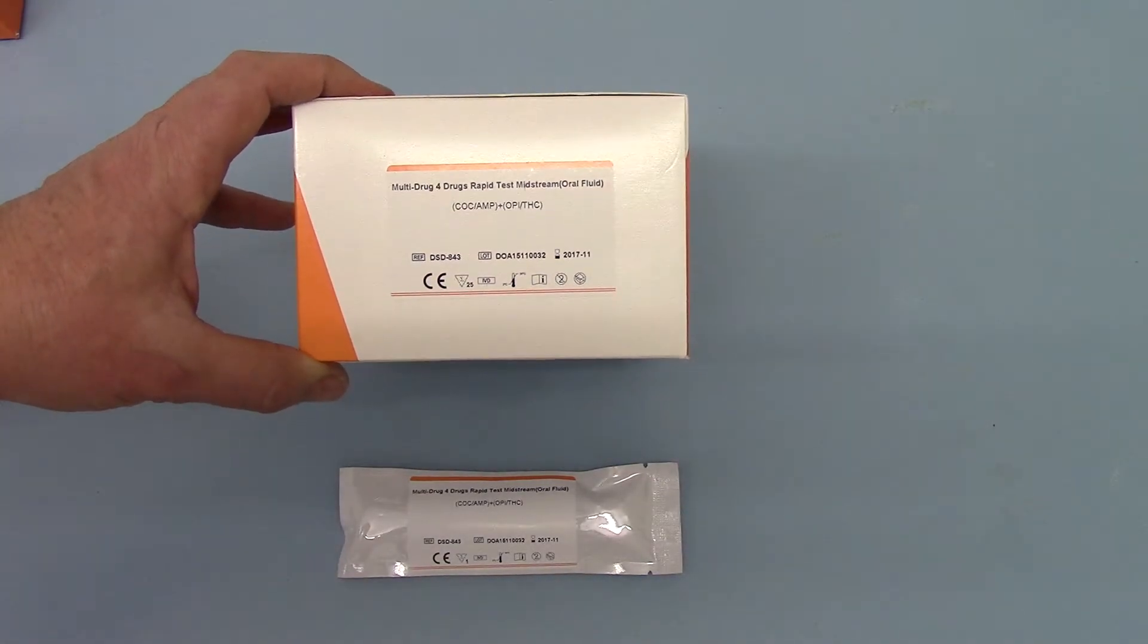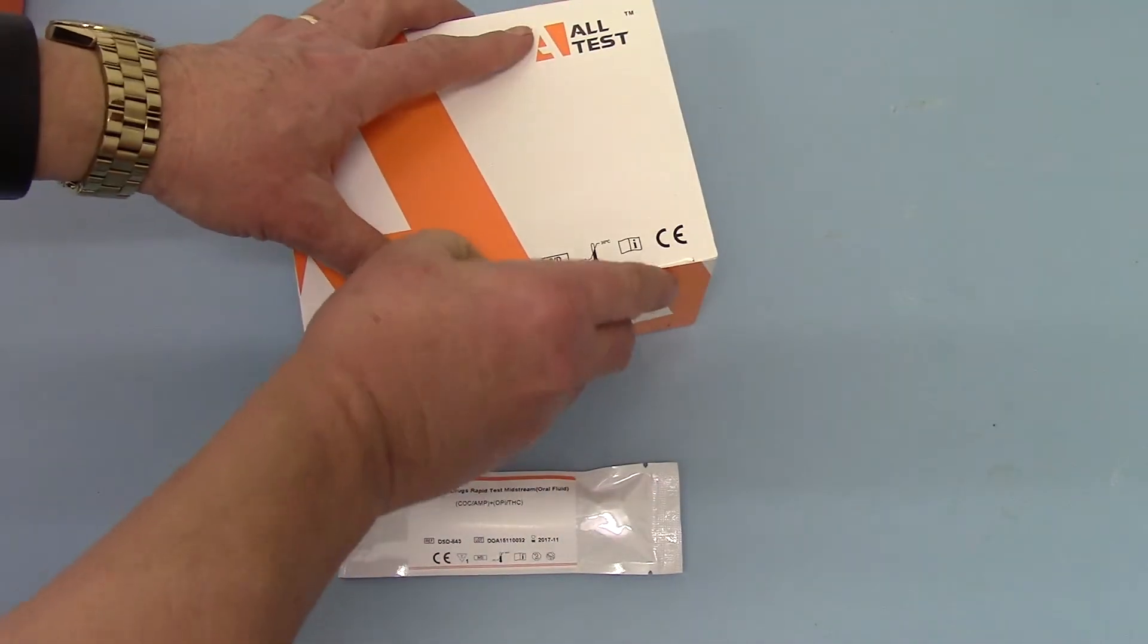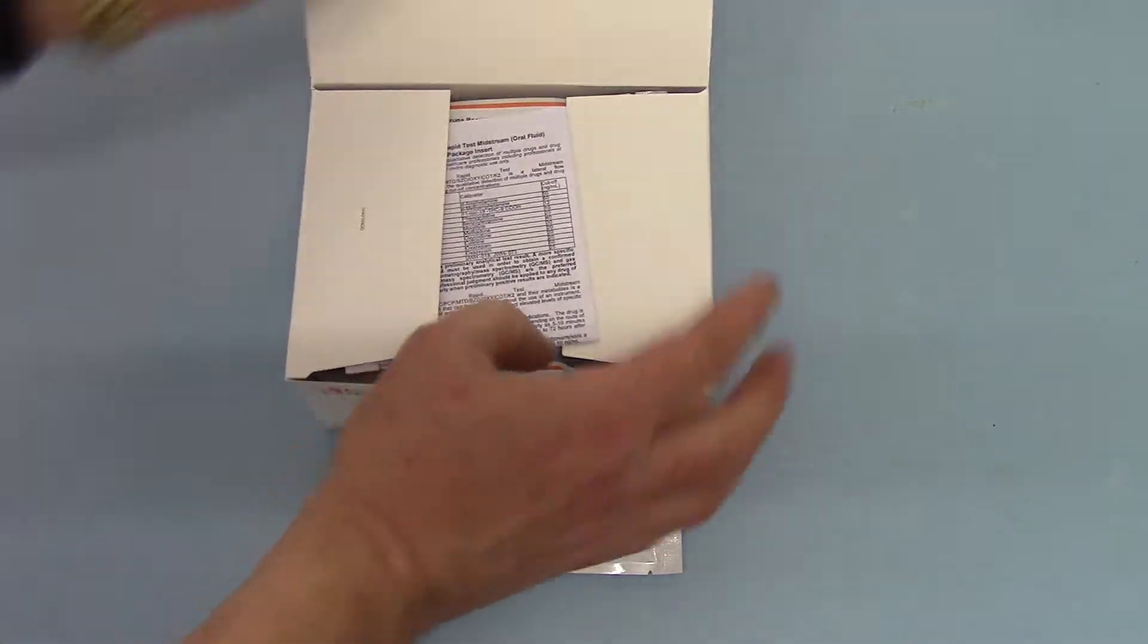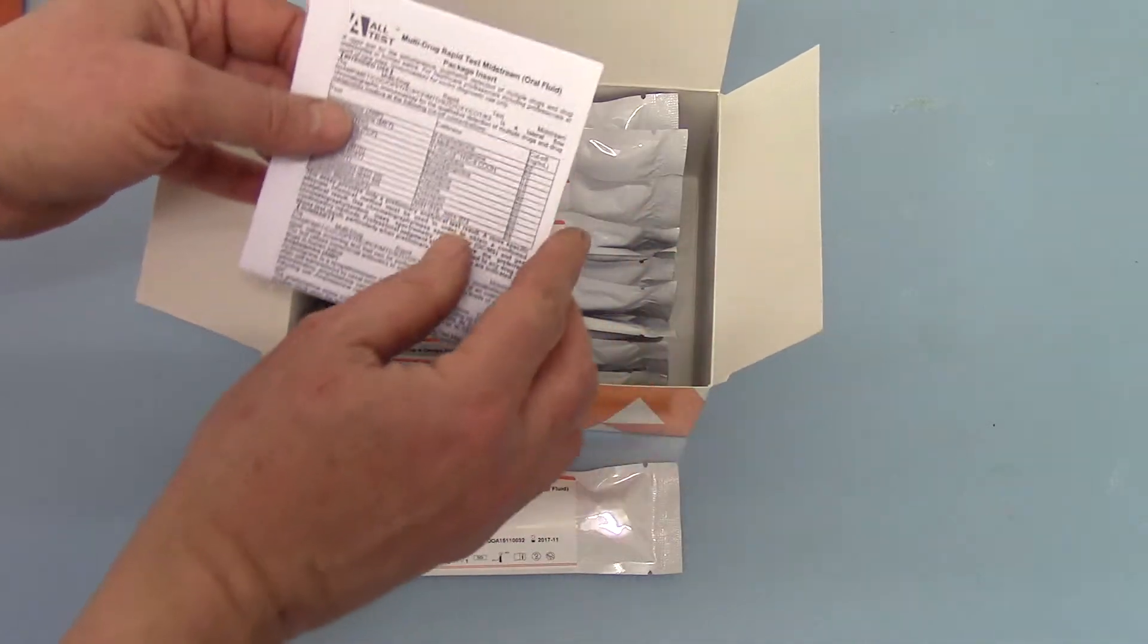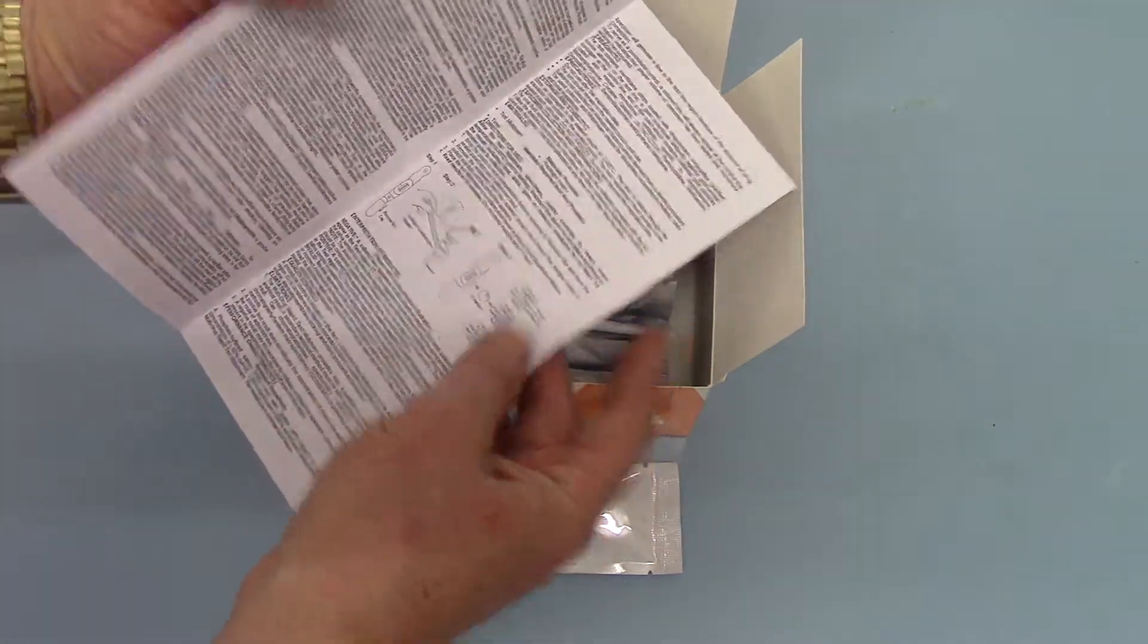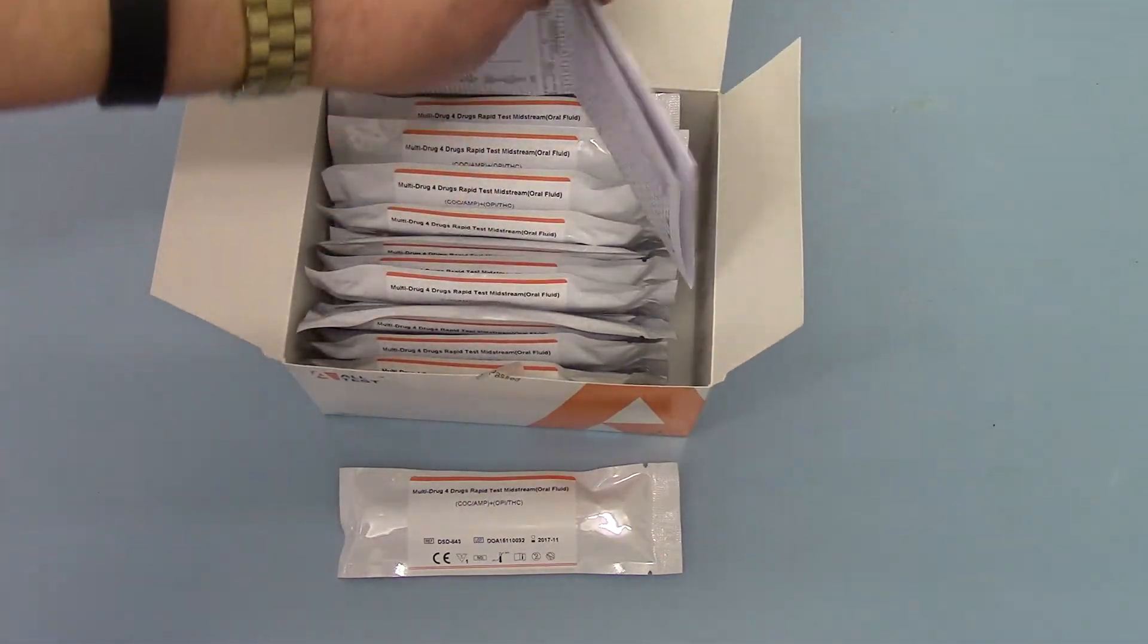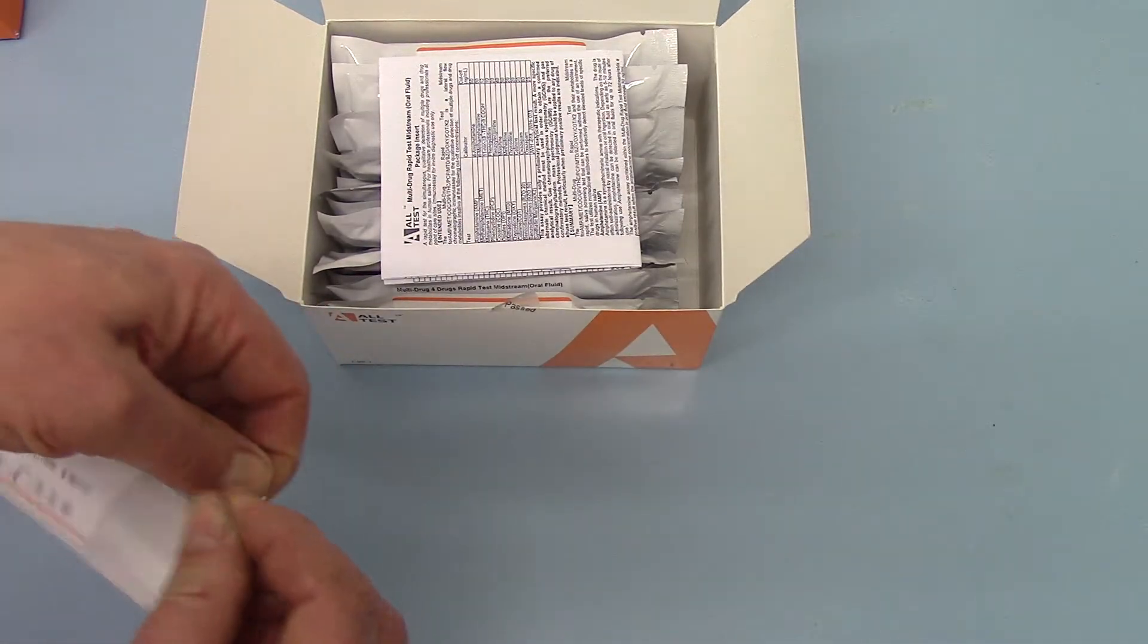The catalogue code for this is DSD-843. If we just pop one of these and show you the contents, what you get is a full test data sheet giving the procedure and reactive and non-reactive substances, and 25 of these individual foils. If we open up one of these foils to demonstrate the design for you.